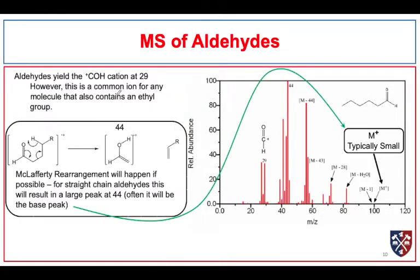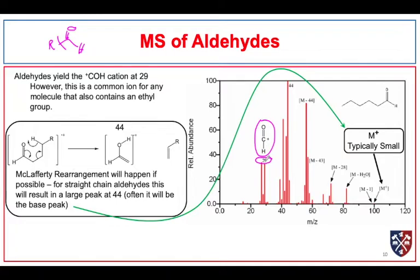For aldehydes, when we get alpha cleavage, we will always get an acylium cation with a mass-to-charge ratio of 29. That's not always spectacular because ethyl cations also appear at 29, but if we have an aldehyde we do expect to see a peak at 29, and if it is absent we may not have an aldehyde. The McLafferty rearrangement for an aldehyde can only split off on one side, and we tend to see a large peak at m/z 44. When this is possible it is often the base peak, and it is also one of the reasons we very rarely see a molecular ion for long-chain aldehydes.